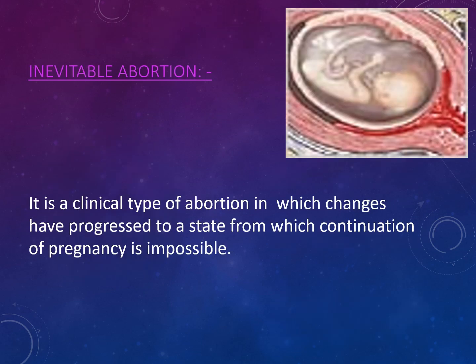Moving to the next type: inevitable abortion. From the name, 'inevitable' means something which cannot be changed. In this type, the abortion process has progressed to such a point that you cannot save the baby — the pregnancy cannot be continued further. The definition states: it is a clinical type of abortion in which changes have progressed to a state from which continuation of pregnancy is impossible. Unlike threatened abortion, in inevitable abortion you have no scope to save the baby and must proceed with termination of pregnancy.